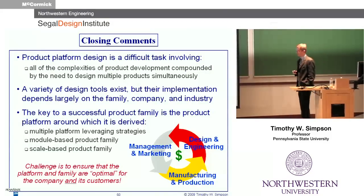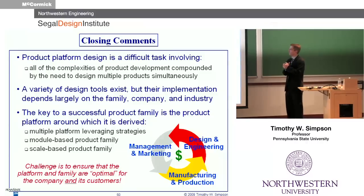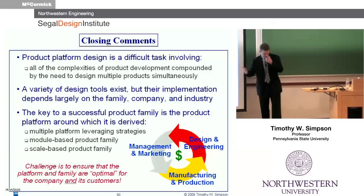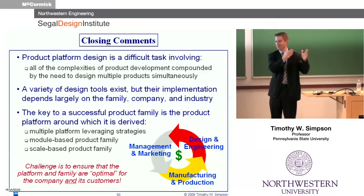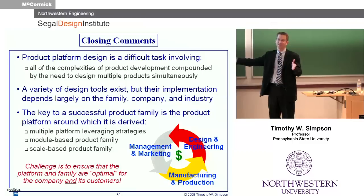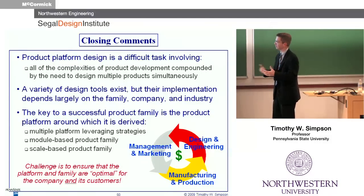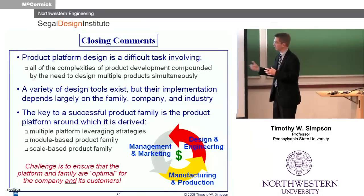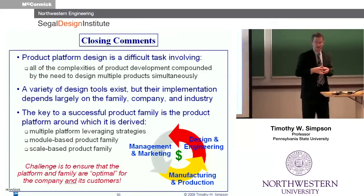Summary: product family and product platform design is a fairly difficult and challenging task. It really involves all the complexities of product development, compounded by the fact of trying to coordinate this across multiple products. I actually have a student at Chrysler who's in charge of engine commonality — he says platforms and commonality are a pain because any time one of his engine designers changes something, he has to go and negotiate with the other two or three teams to make sure they're okay with that change. So this coordination may save you dollars, but you need somebody running around doing that work. There are a lot of tools out there; we spent a lot of time getting to know the ins and outs of each of them and are now trying to really integrate them together. And really there's no silver bullet — it depends on the product line, the company, and the industry.